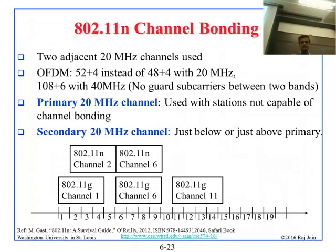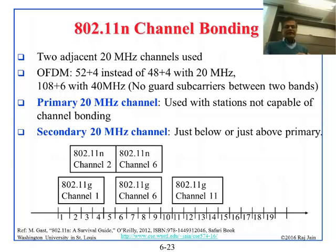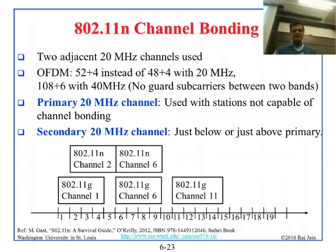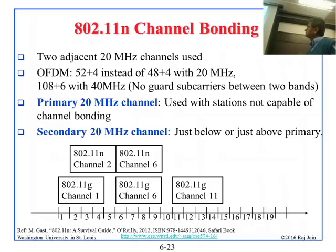The next new idea — and all of these ideas are pretty new because we didn't know about them before 802.11n — is channel bonding. Channel bonding says you don't have to use one channel. You can take two channels and bond them together, meaning you use both. Instead of 20 megahertz, you can use 40 megahertz if they are next to each other. If you do channel bonding, you use two channels next to each other and get twice the bandwidth, so your speed goes up twice.